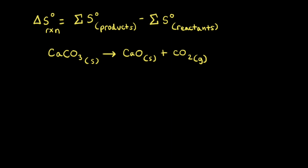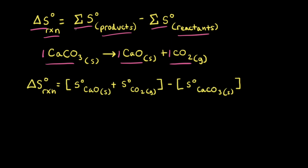Now let's calculate the standard change in entropy for a chemical reaction — the decomposition of one mole of calcium carbonate into one mole of calcium oxide and one mole of carbon dioxide gas. To calculate the standard change in entropy, we sum the standard molar entropies of the products and subtract the sum of the standard molar entropies of the reactants. The products are calcium oxide and carbon dioxide; the reactant is calcium carbonate.